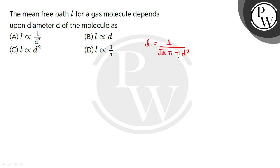Where n is the number of molecules per unit volume, d is the diameter of the molecule. Here you can see that L is inversely proportional to the square of the diameter of the molecule.